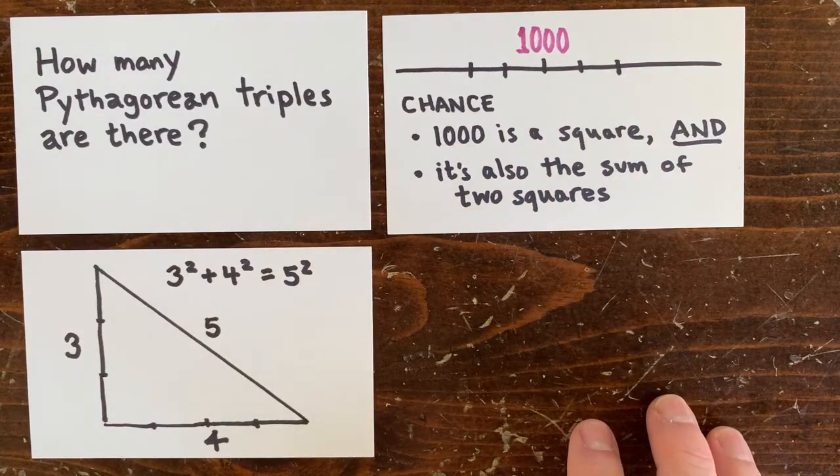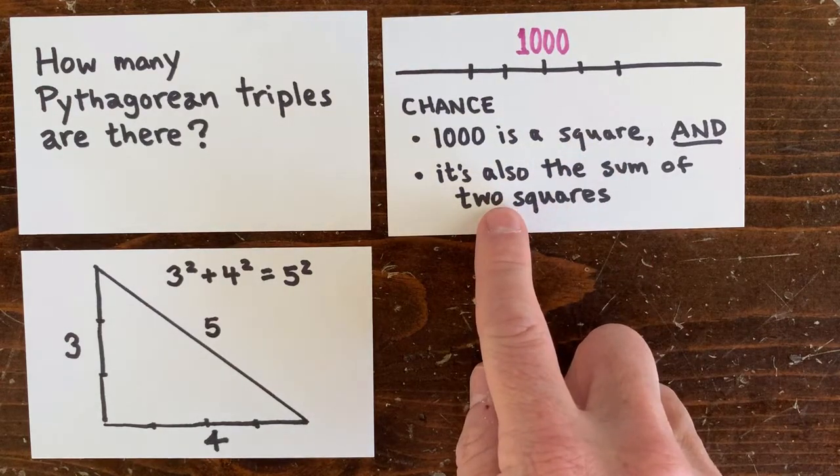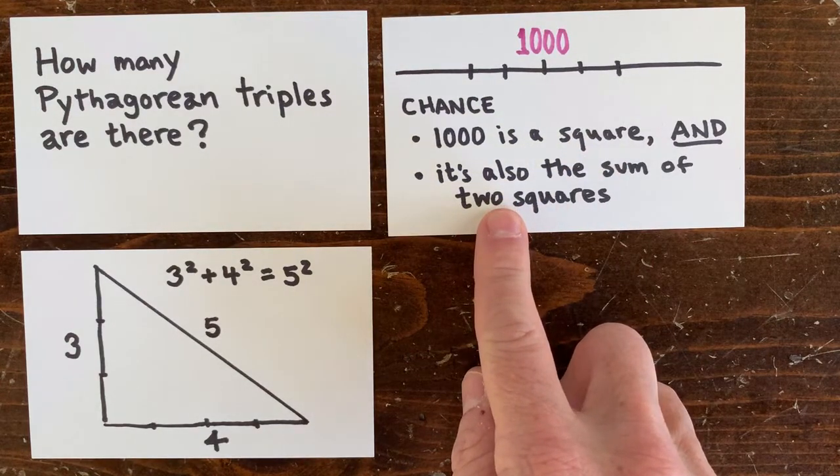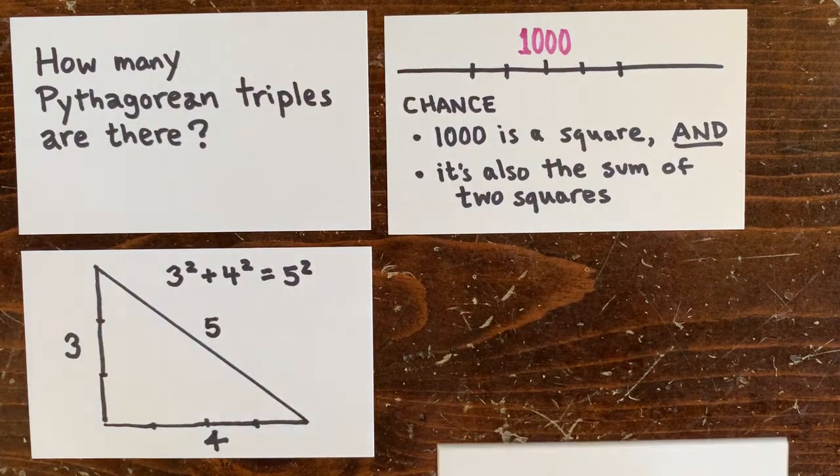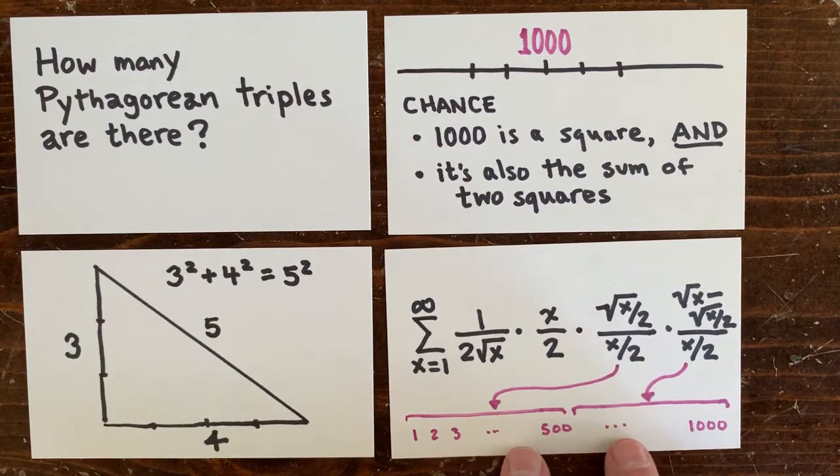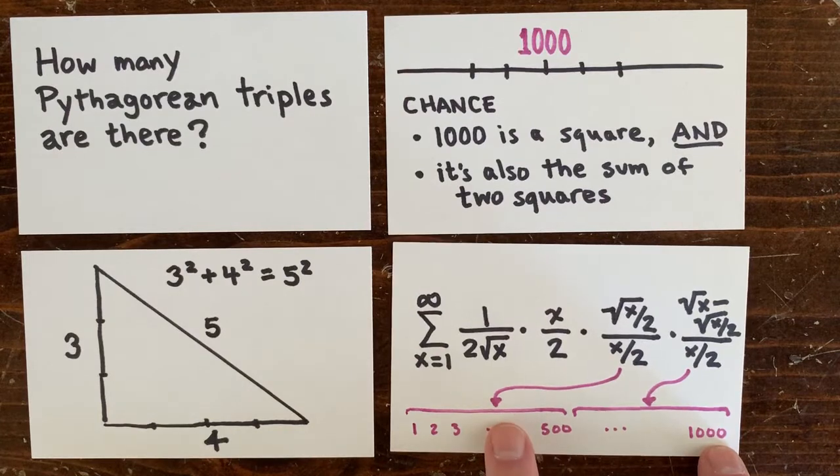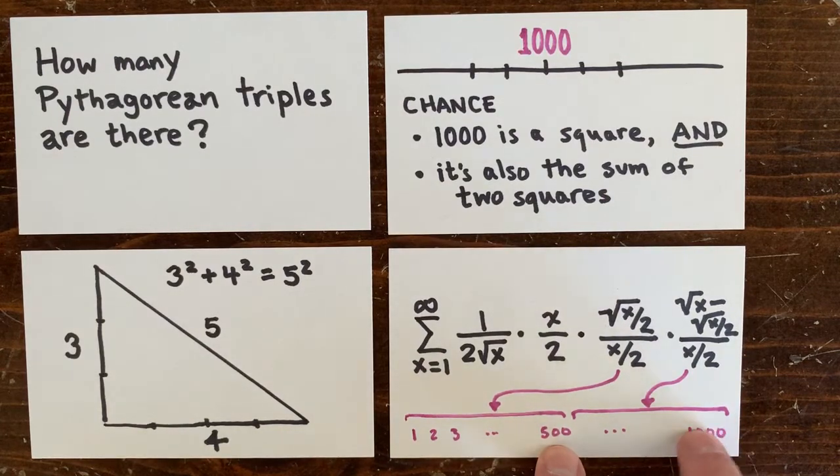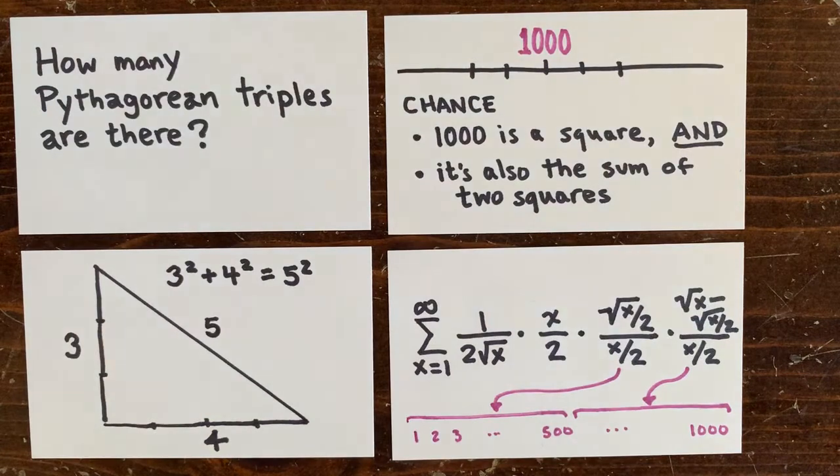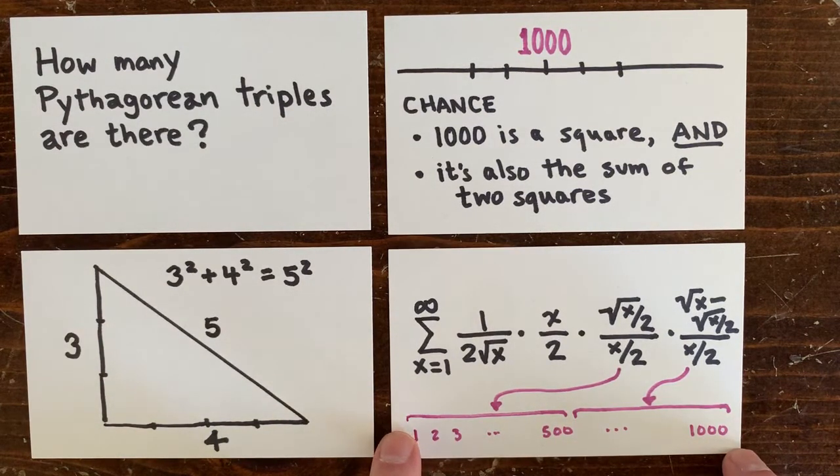So here, n not only has to be a perfect square, it also has to break down into the sum of two perfect squares. Well, what's the chance of that? There's about n over 2 ways to pick two numbers that sum to n. The smaller number is between 1 and n over 2, and the larger one is between n over 2 and n. Actually, the larger number can't be too close to n if they're both squares. So it's between n over 2 and the next square down from n. So here's the size of that region.